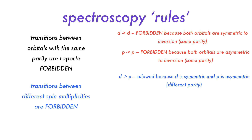Since d-orbitals are symmetric to inversion and p-orbitals are anti-symmetric to inversion, d-to-p orbital transitions are allowed because the parity is different. Pi-to-pi-star orbital transitions are also allowed. Transitions between different spin states or multiplicities are also forbidden, so the transition between a quartet A2 to a doublet A2 is forbidden because the number of unpaired electrons is different. But a transition from a quartet A2 to a quartet T1 is allowed, because the multiplicities or number of unpaired electrons are the same.